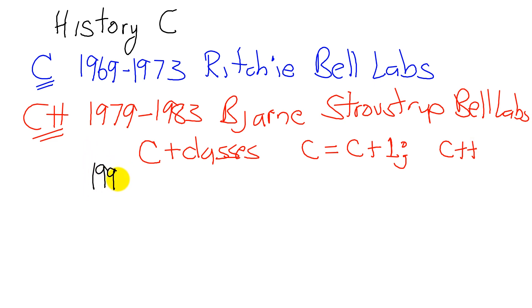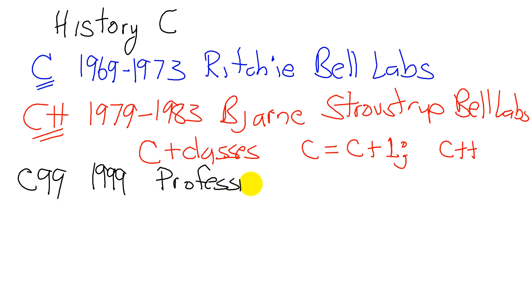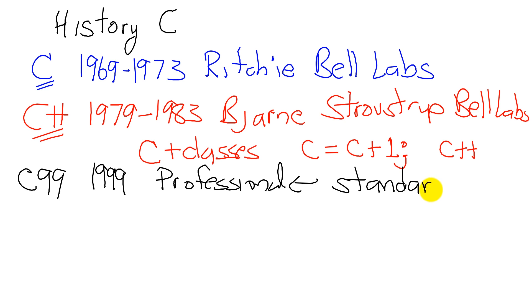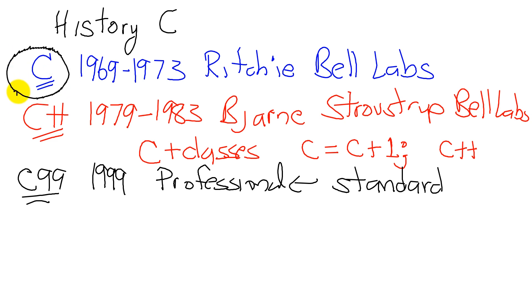In 1999, the language C99 was developed, and this is actually a professional language that adheres to very strict standards. A lot of people who use C program in C99, but we won't, because we believe that C is a simpler language.